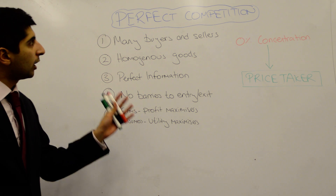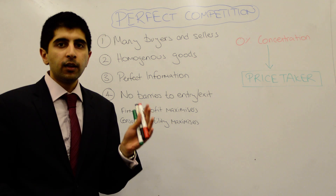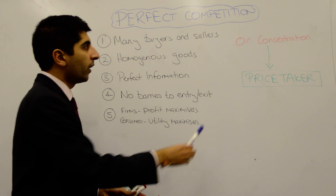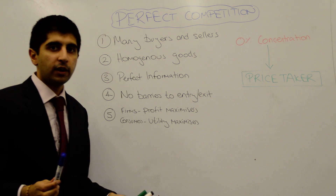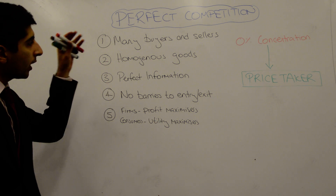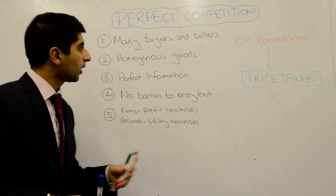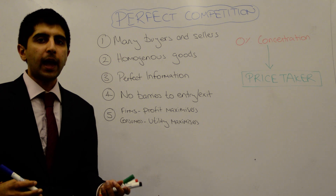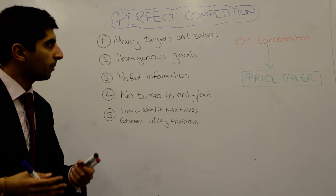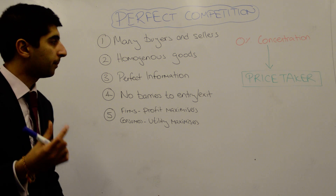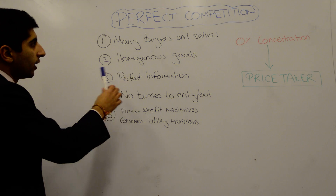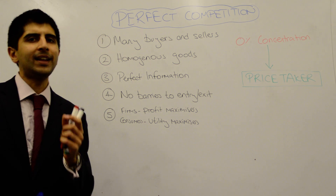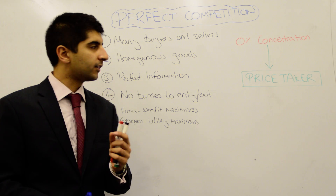We're going to start off by looking at one extreme side of the scale when it comes to market structures — perfect competition, where there is 0% concentration in the market. What characteristics exist in perfect competition? First of all, we assume there to be many buyers and sellers of a specific good. We assume that the goods sold and bought are homogenous — they're identical goods. That's a fundamental assumption we make.